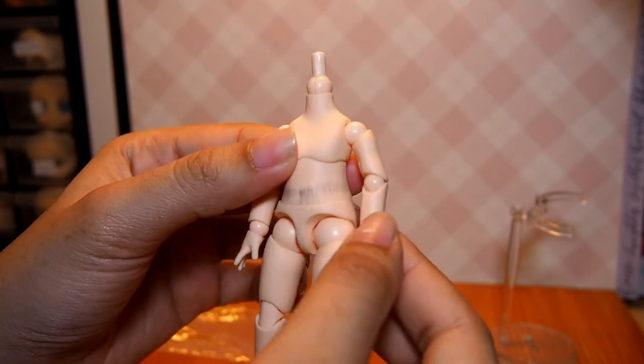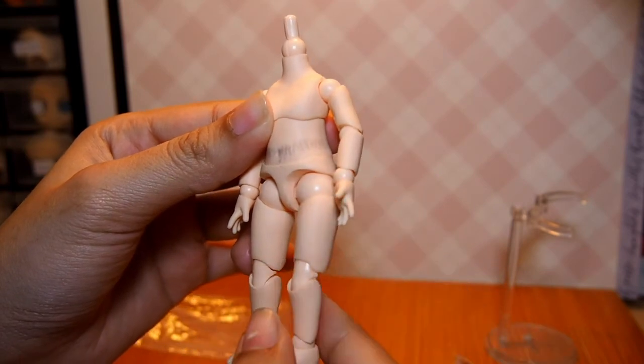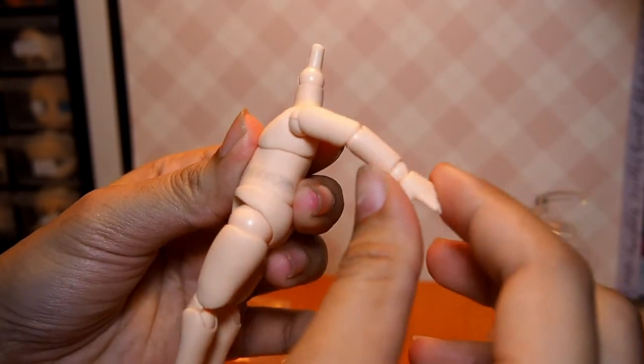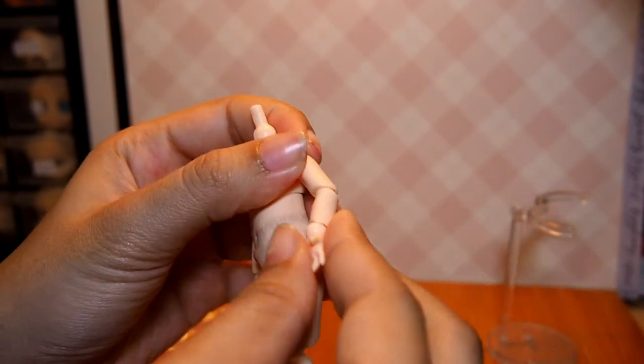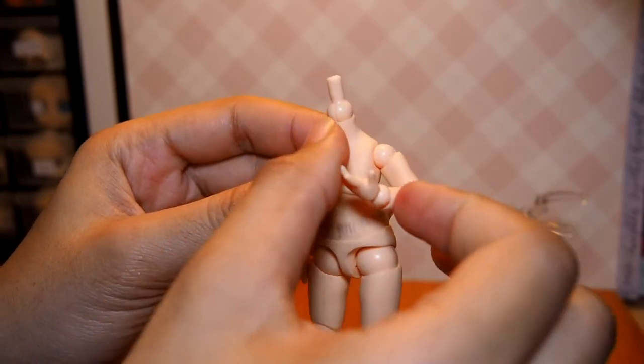As for optional parts you can buy, there are actual hand sets, height extension to make the doll 1cm taller, and cat paws, which look pretty cute.